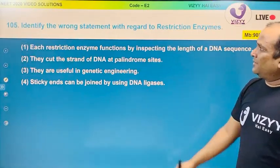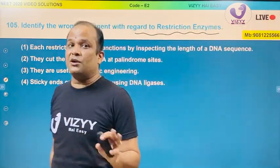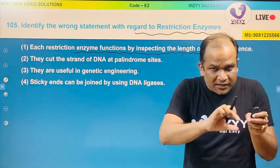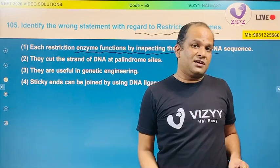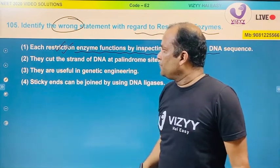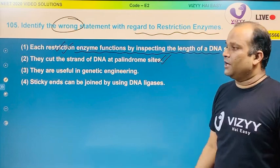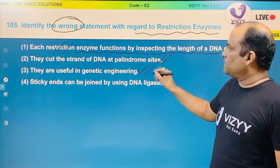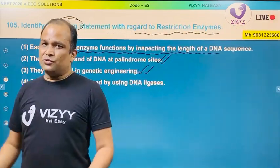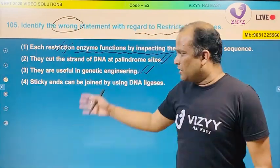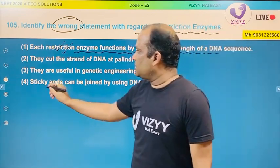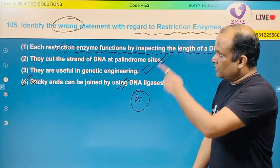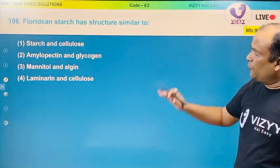Question 105: find the wrong statement with regard to restriction enzymes. Restriction enzymes function by inspecting the length of the DNA — they inspect and detect palindromic sequences, then cut the DNA strand at palindromic sites. They are useful in genetic engineering; without them, genetic engineering is not possible — this is correct. Sticky ends can be joined by use of DNA ligase — this statement does not relate to restriction enzymes, therefore this statement is wrong. The answer is the fourth option.